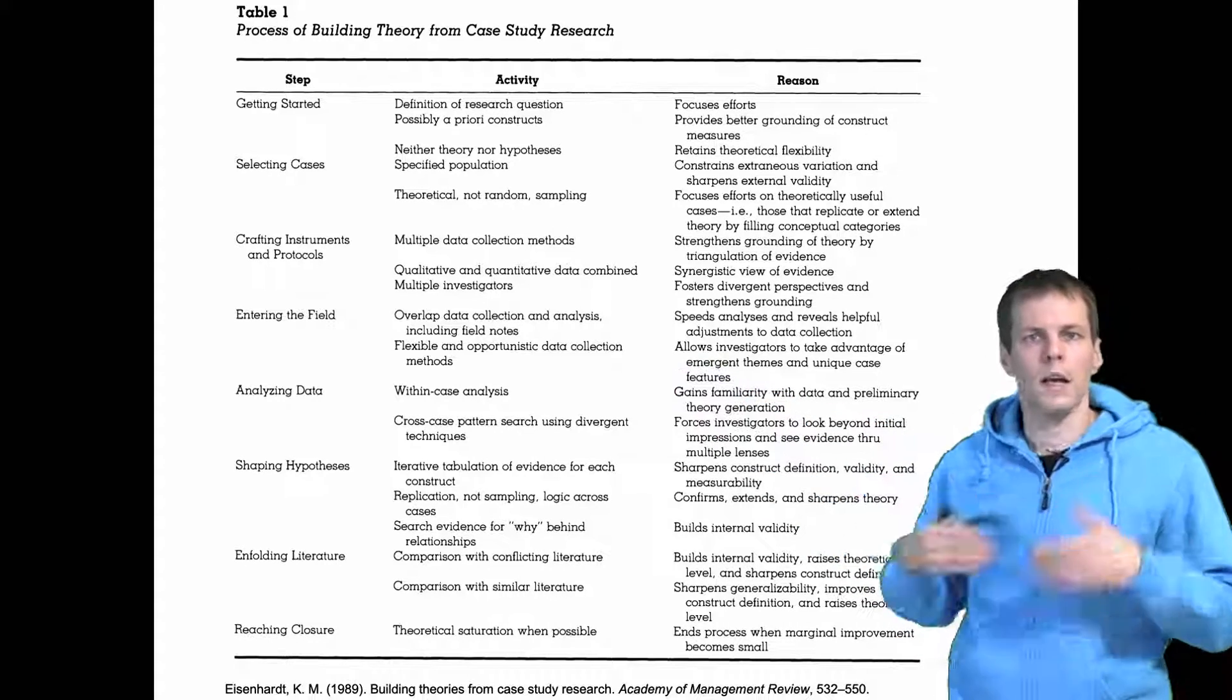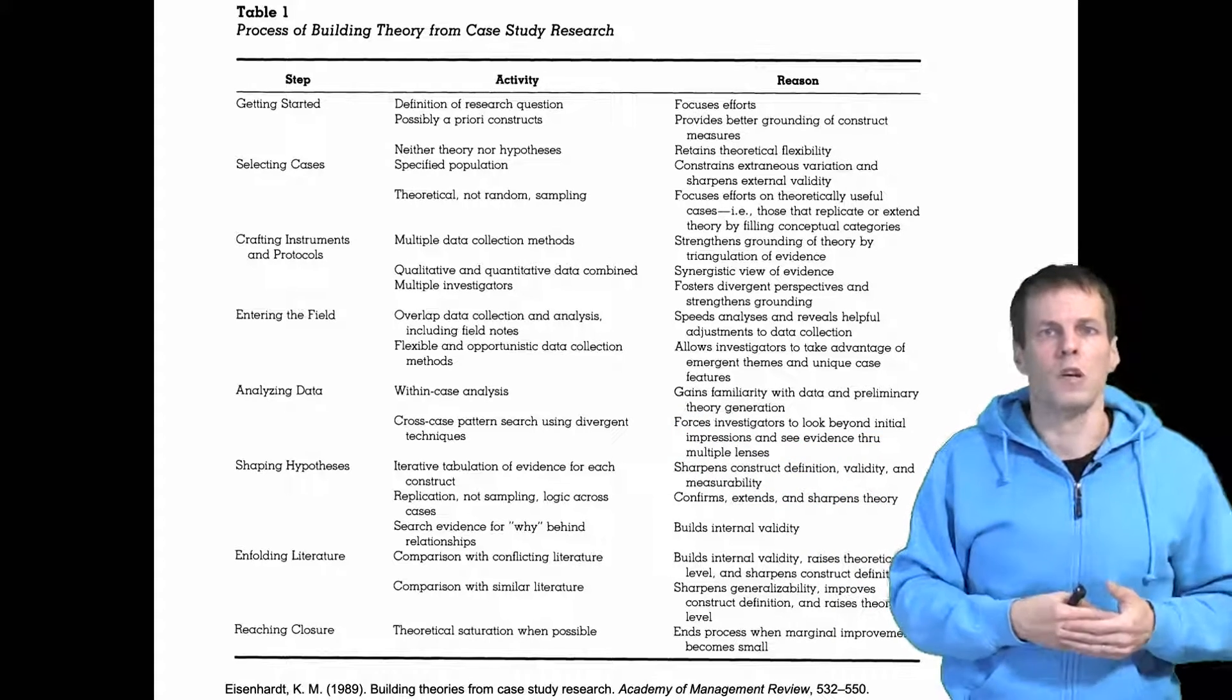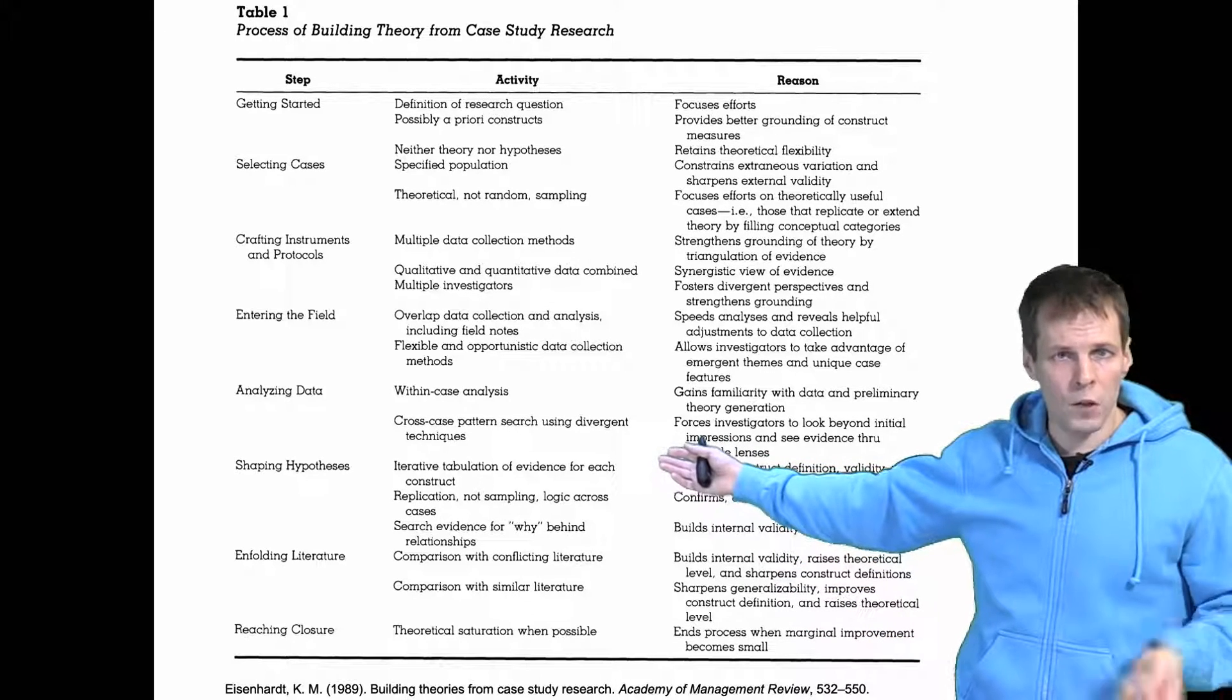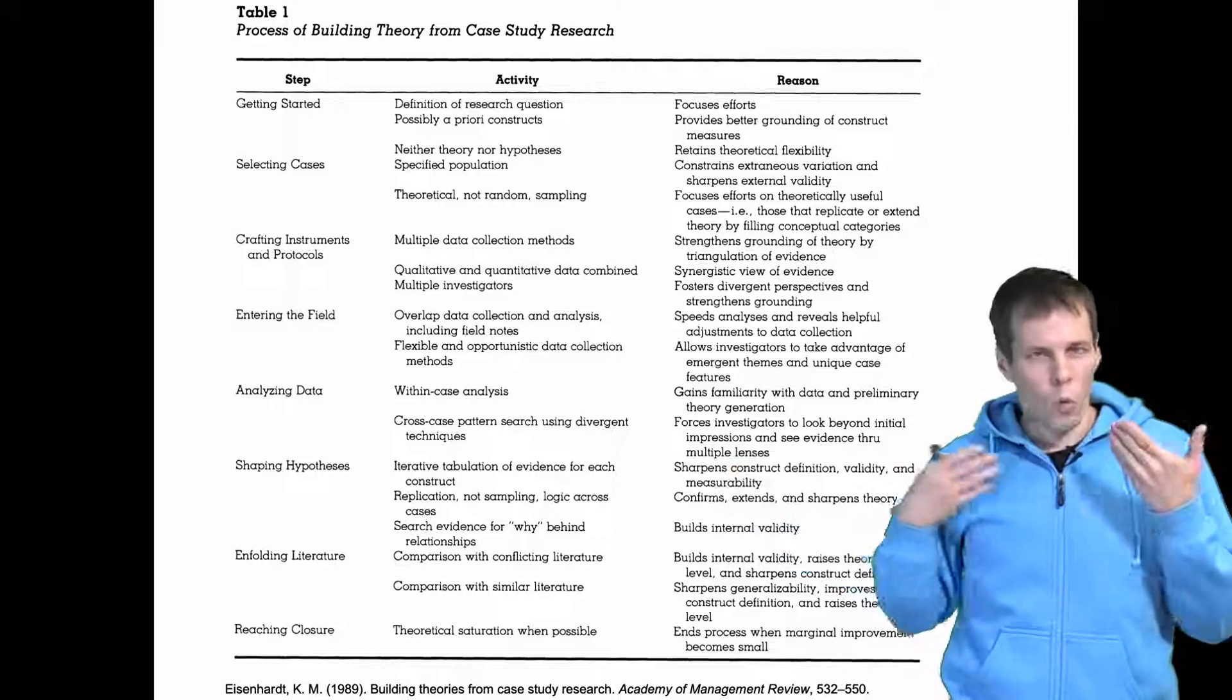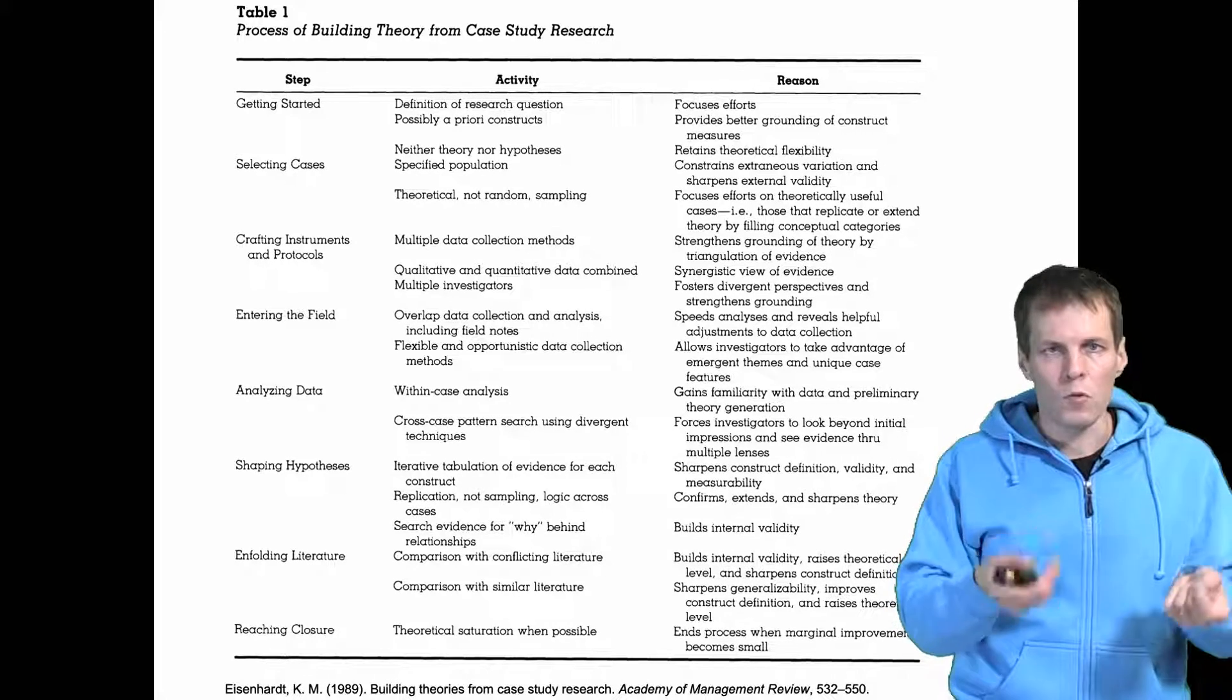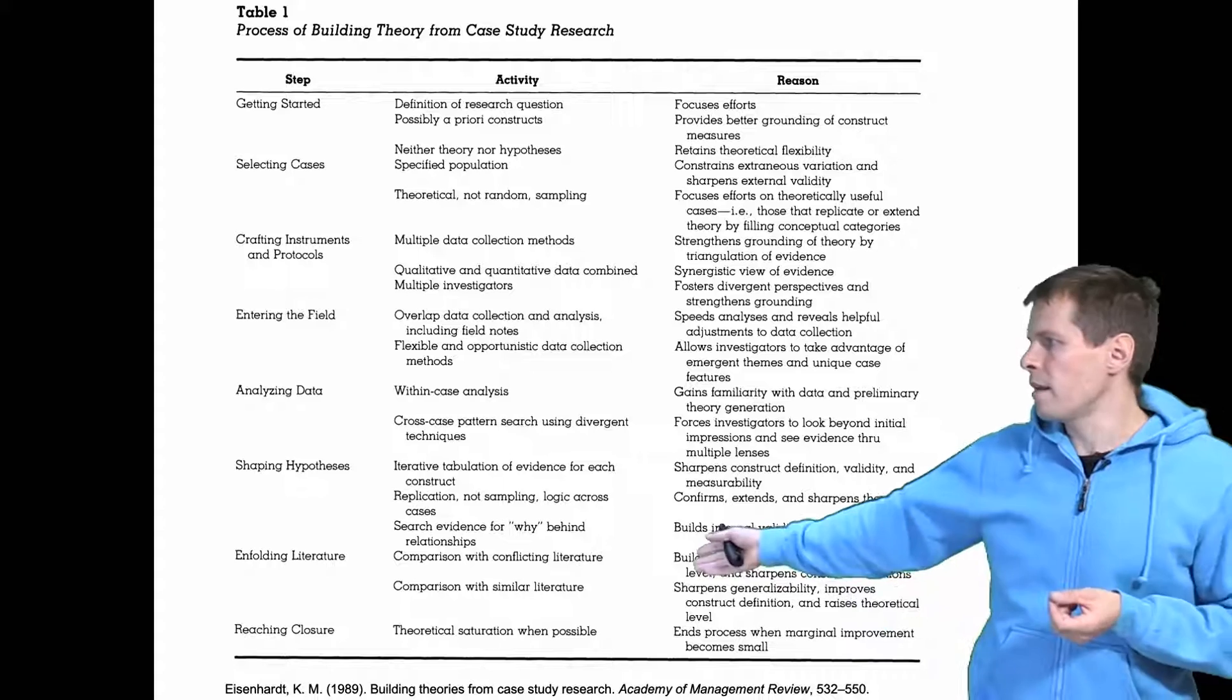Then you do analysis. Analysis always starts with within case analysis or you analyze each case separately and then you do cross case analysis, so you do pairwise comparisons and for example comparisons using more than two companies. Then follows the writing of the tables to show associations and then you write a narrative or description of why there are these relationships in the text and you enter quotes into the text that explain the process or explain the data, show the data that allowed you to infer that there actually is a process.